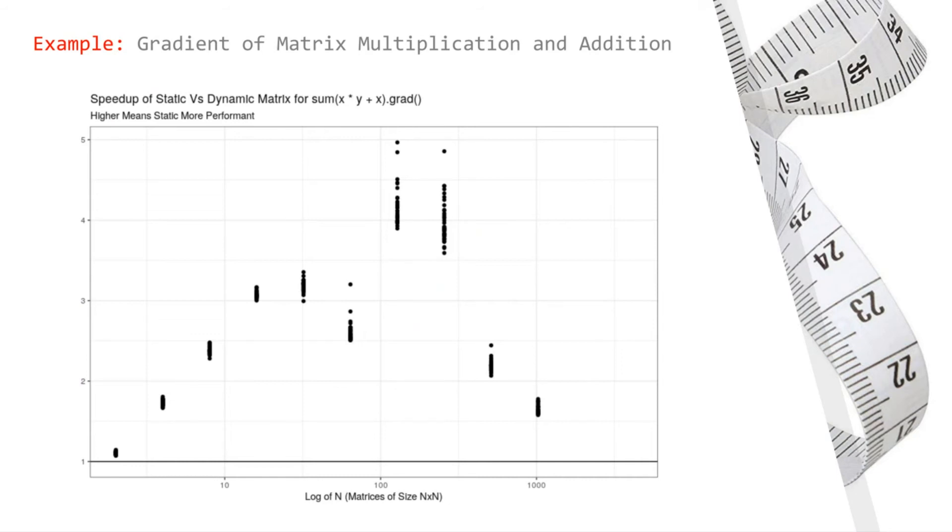For GPUs, these speedups should be much larger. Here are some preliminary results of comparing gradient evaluations of multiplying two matrices and then performing a matrix addition. For even small matrices, we should see very nice speedups.